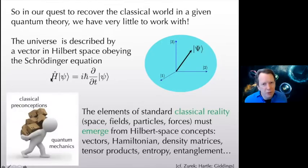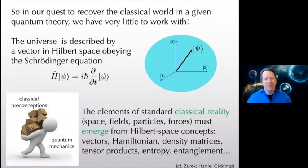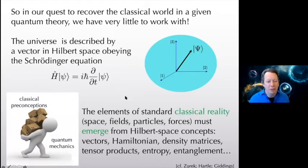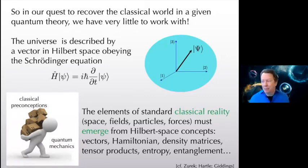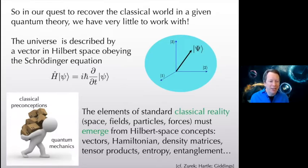All the familiar classical physics concepts — space, fields, particles, forces, interactions — none of that appears in the language of just a Hamiltonian acting on Hilbert space. What you're looking for is a recipe to derive space, fields, and interactions from the bare-bones quantum description. The quantum language allowed includes vectors in Hilbert space, the Hamiltonian, density matrices, entanglement — good old quantum words. We derive an emergent classical description from that.